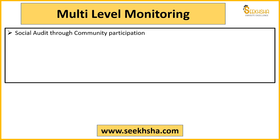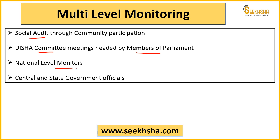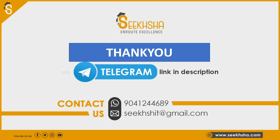There is also a provision for social audit in this scheme. Community gram sabha members will participate and socially audit what assets have been created. DISHA committee meetings, which are headed by Members of Parliament, national level monitors, and central and state government officials all carry out monitoring to ensure that actual work is happening and assets are being created under the scheme.